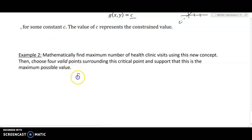So Example 2: mathematically find the maximum number of health clinic visits using this new concept. Then choose four valid points surrounding this critical point and support that this is the maximum possible value. So f(x,y) is the function that was given to us. And I'm going to use x and y here just to make this consistent with our definition. So doctors will be represented by x, nurses will be represented by y. So x is going to be my d, y is going to be my n. g(x,y) is equal to 40,000x + 10,000y.